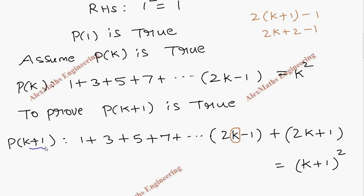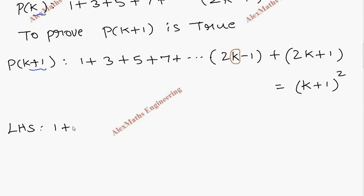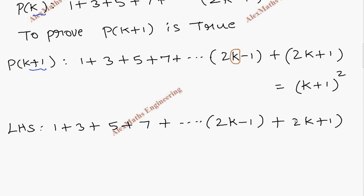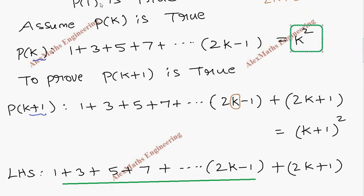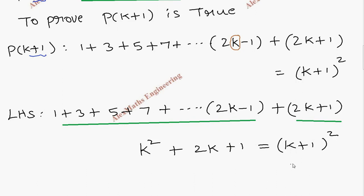For proving, we take the left hand side: 1 plus 3 plus 5 plus 7 plus dot dot dot 2k minus 1 plus 2k plus 1. The portion up to 2k minus 1 can be replaced by k squared — since that same expression appears in our P of k assumption. So we have k squared plus the remaining term 2k plus 1.